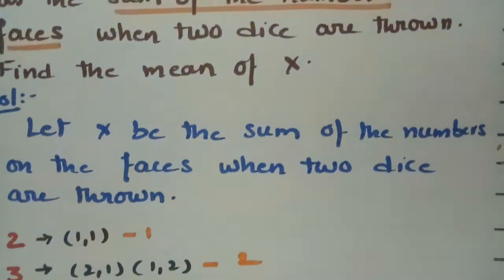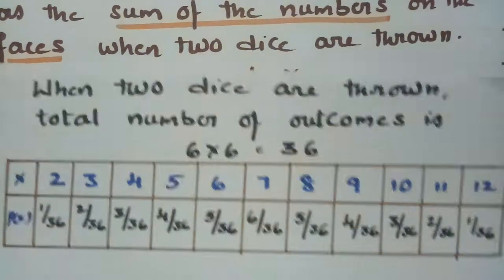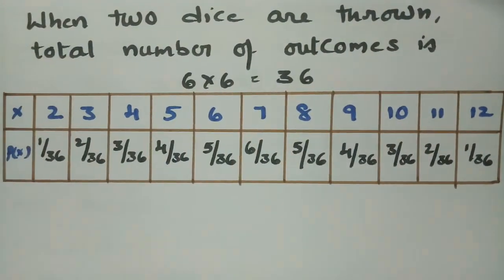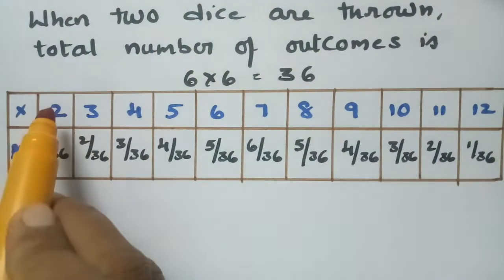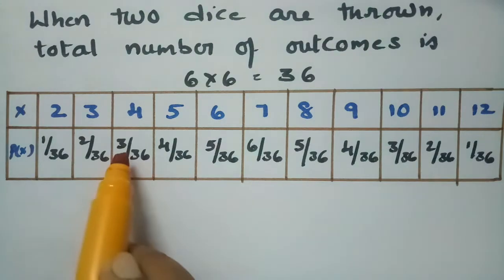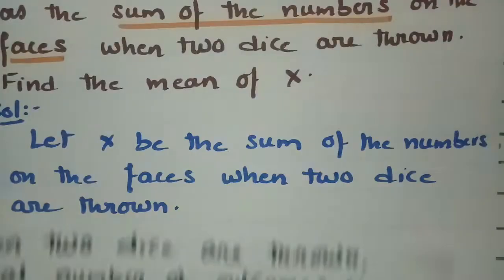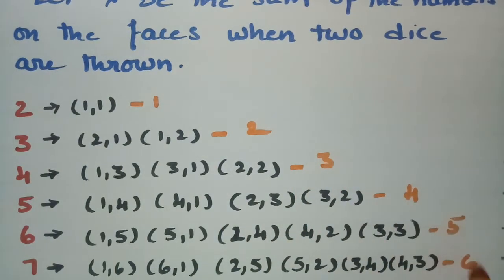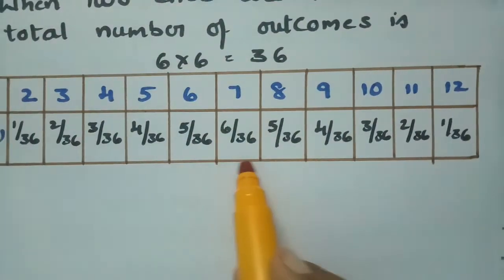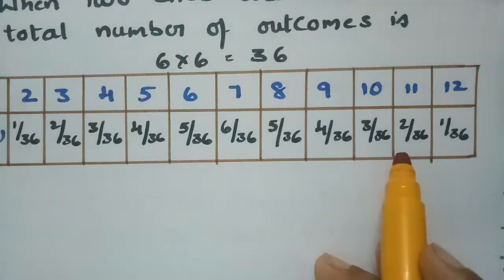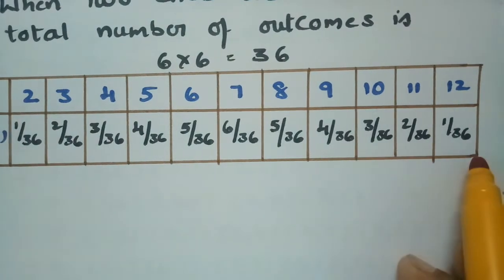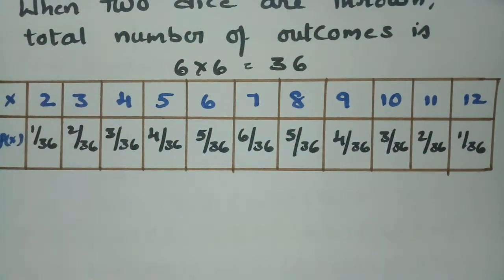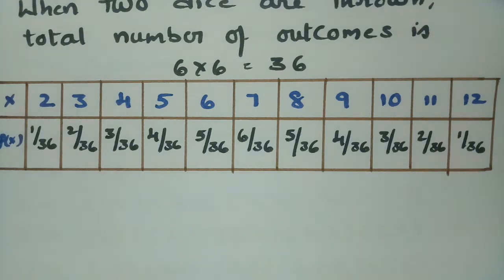When two dice are thrown, the total outcomes are 6 by 6, that is 36. The probabilities are: 1/36, 2/36, 3/36, 4/36, 5/36, 6/36, then again 5/36, 4/36, 3/36, 2/36, and 1/36. This is the probability distribution function for the sum of the numbers on the faces.